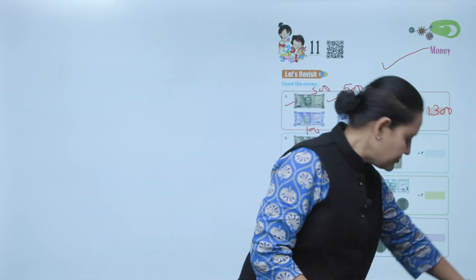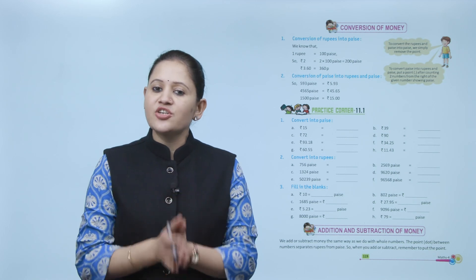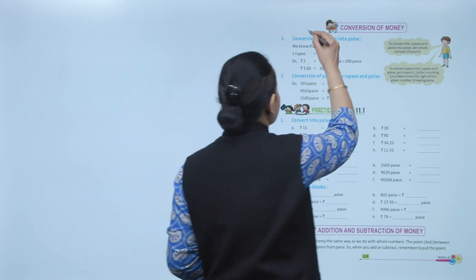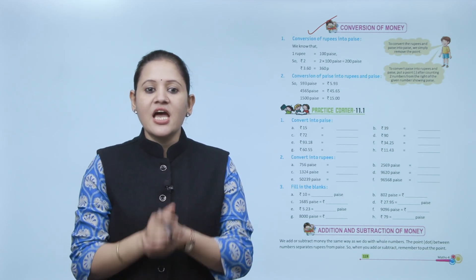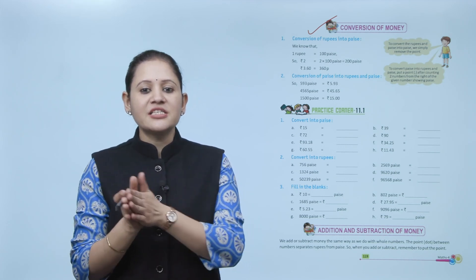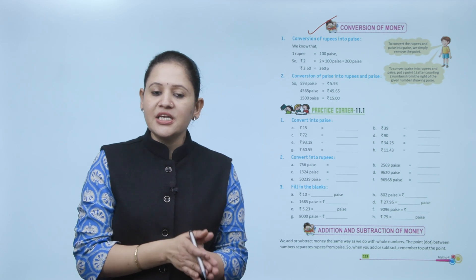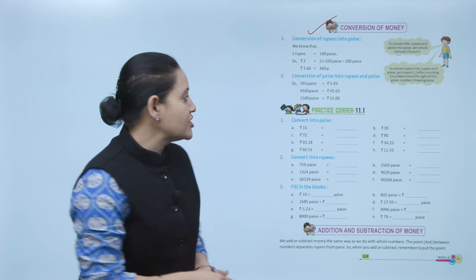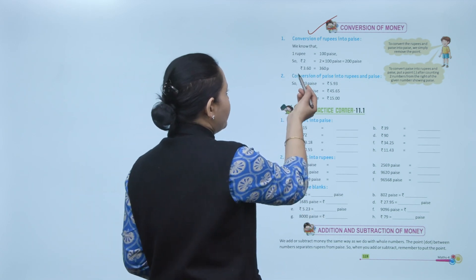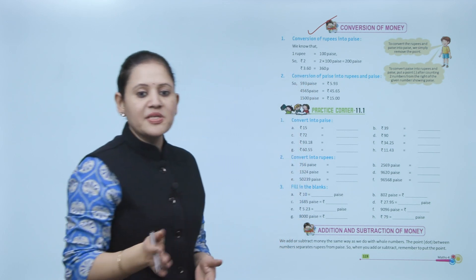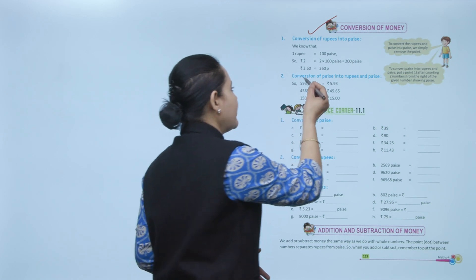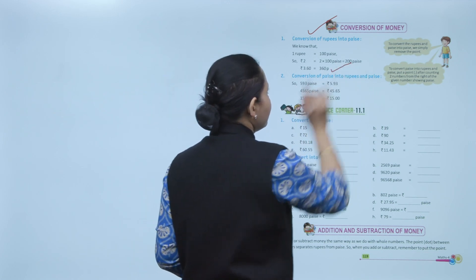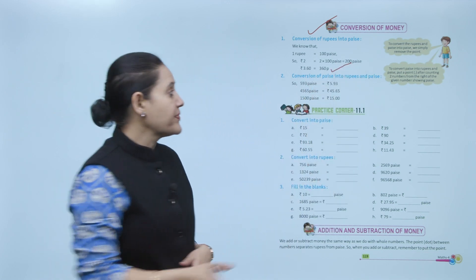Next is conversion of money. First is conversion of rupees into paisa. As we know, one rupee equals 100 paisa, so we have to multiply by 100 to convert into paisa. For example, to convert 3.60 rupees, we multiply by 100 to get 360 paisa.